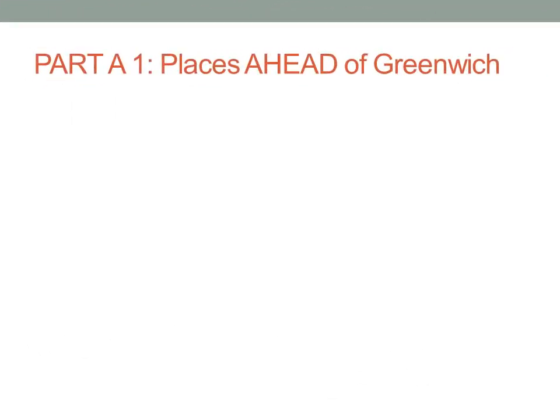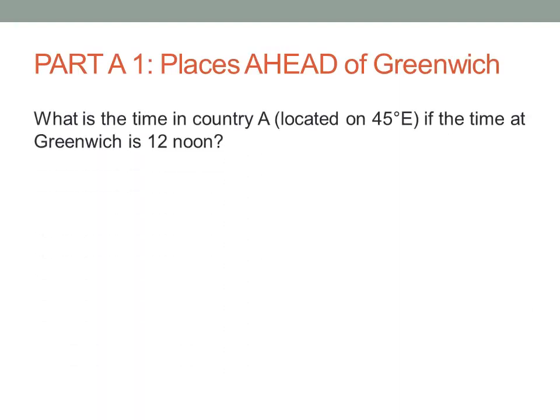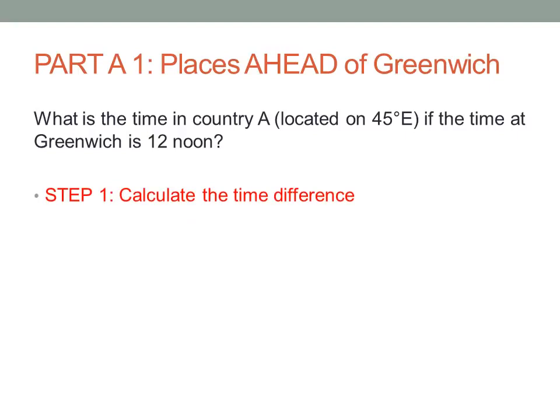Part A1 — places ahead of Greenwich. Our first worked example states: what is the time in country A, located on 45 degrees east, if the time at Greenwich is 12 noon? Country A is located to the east of Greenwich, therefore this country will be farther ahead in time. To calculate the time, our first step involves calculating the time difference. We're going to divide 45 by 15, which gives us 3 hours. The time difference is 3 hours.